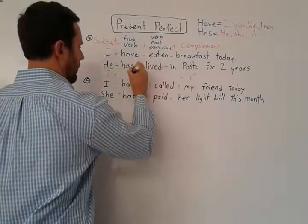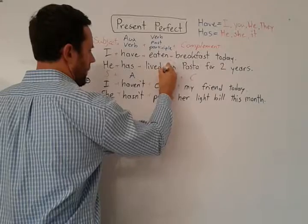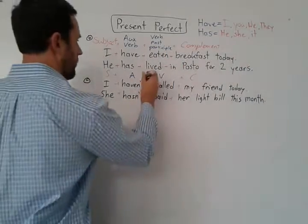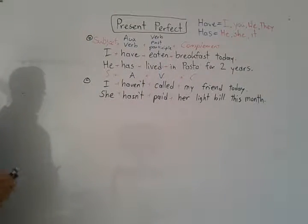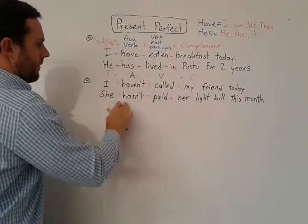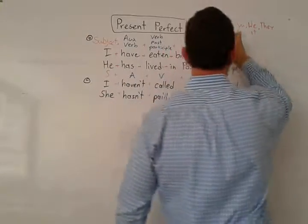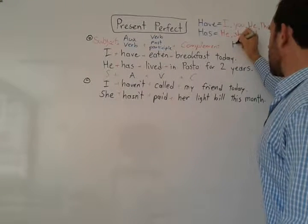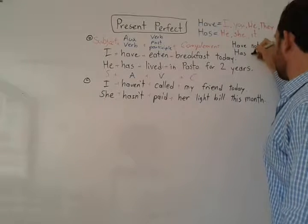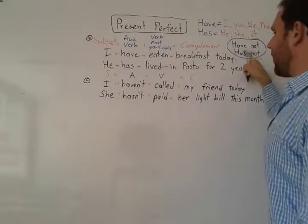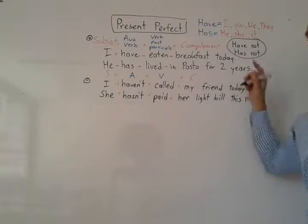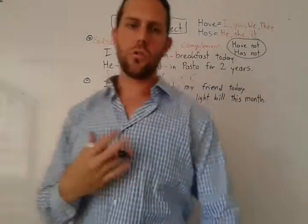Your auxiliary verb. Su verbal principal con past participle. For negatives, estos: have not, has not. Contractions: haven't — have not. Hasn't — has not.